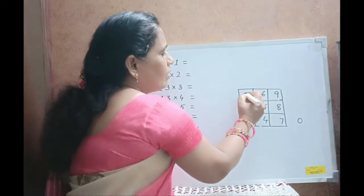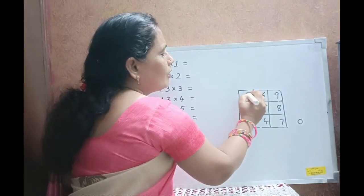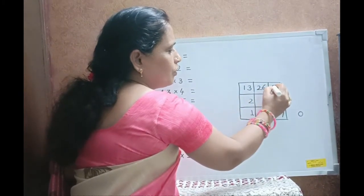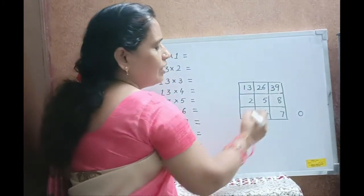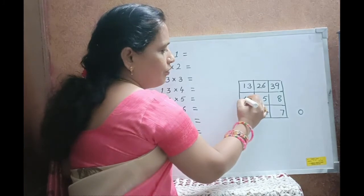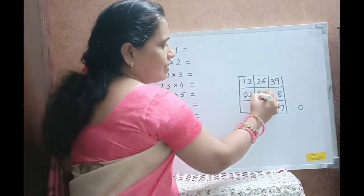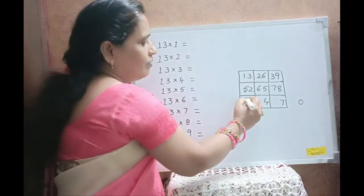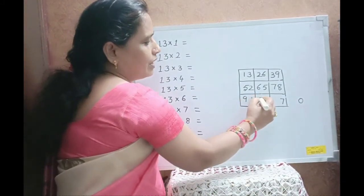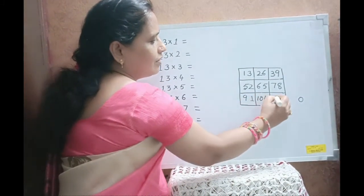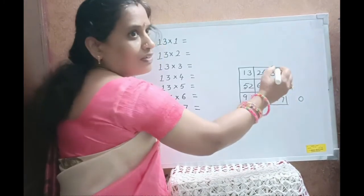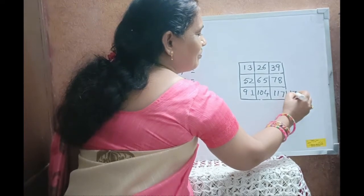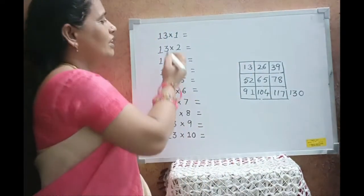For the tens digit, write the numbers 1, 2, 3 and skip 4, then 5, 6, 7, skip 8 and write 9, 10, 11, skip 12 and write 13.